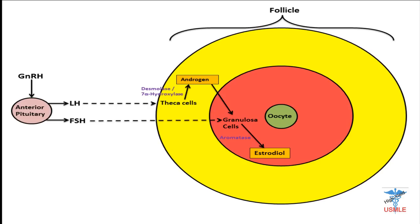It's very important to know which enzyme is in which cells. Aromatase is only available in granulosa cells, and desmolase — also known as 17-alpha-hydroxylase — is only available in theca cells. A deficiency in one of these enzymes is going to lead to other manifestations. We now have estradiol, which works on the oocyte and helps in maturing it. That is the normal pathway.